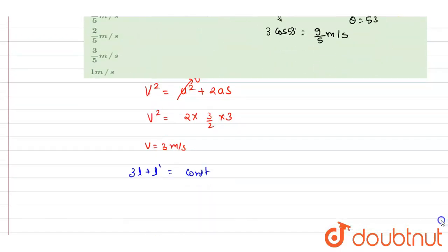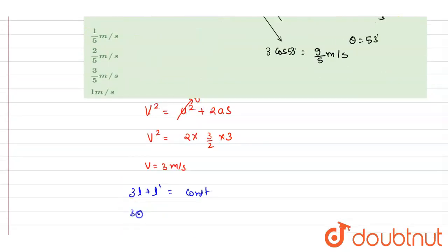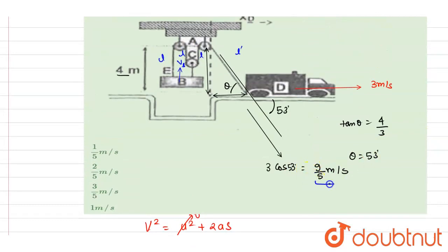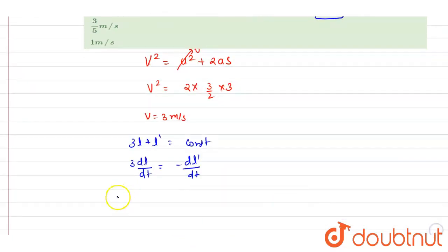So if you differentiate it both sides, I will write down 3 dl/dt is equals to negative dl'/dt. So if you see, this is the value of dl'/dt, and you can just put this here and we will write down this is vB.